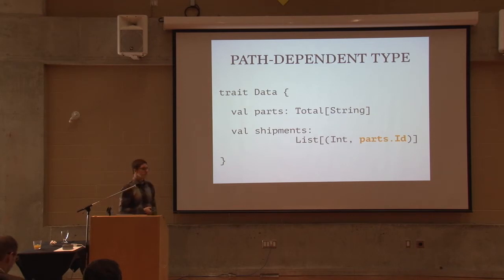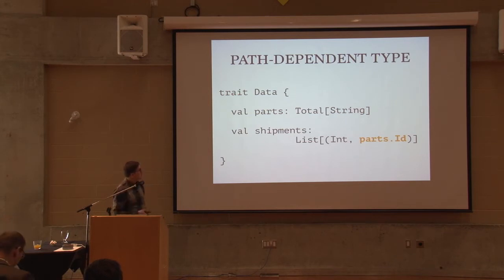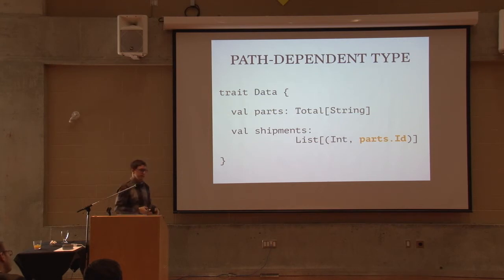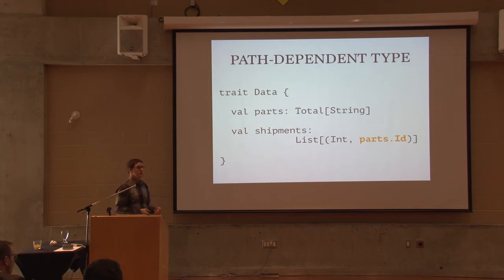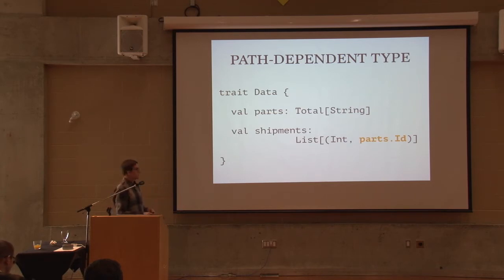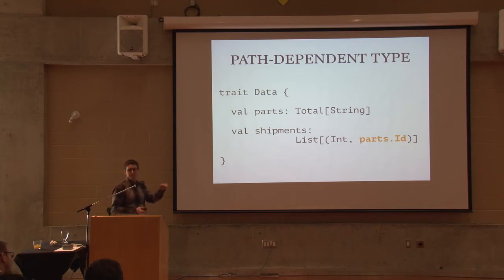This is the ultimate benefit. It allows us to encode our two tables with this approach: when we define the parts data structure we use the total map instead of map, and we don't have to invent some kind of key type — the total map takes care of it. In the shipments data structure we get to refer to the ID type that is in the parts data structure. This is path-dependent types, and it works out really well here because it documents clearly the foreign key relationship between shipments and parts.